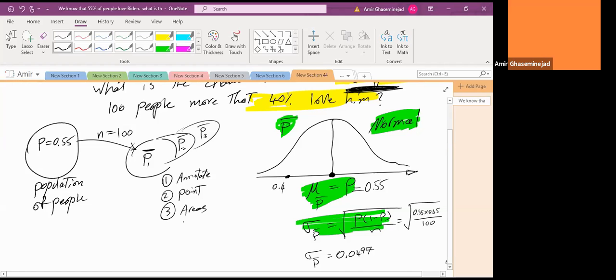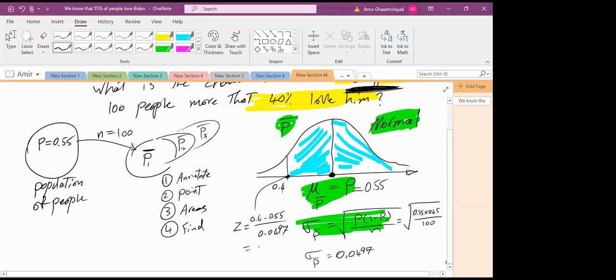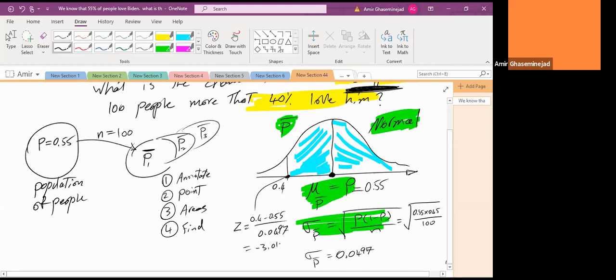Then we have to identify areas. The area of interest is more than this. So maybe I hash it like that. This blue area, we are interested in anything more than 0.4. And then we have to find the areas. To find the areas, we have to go to the table. But table is based on z. So this is 0.4 minus 0.55 divided by 0.0497. It is minus 3.0181.